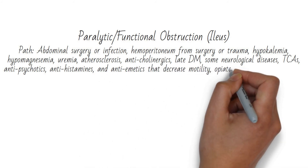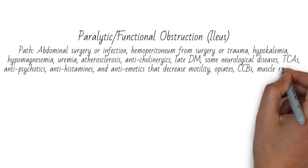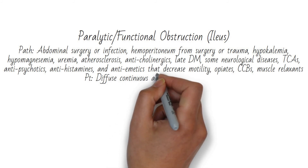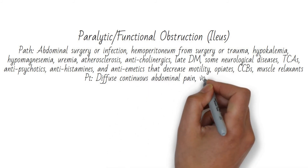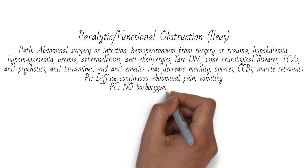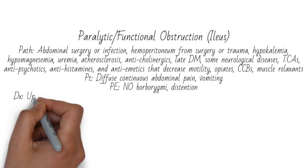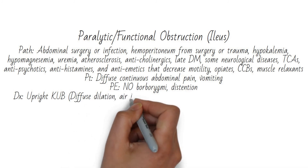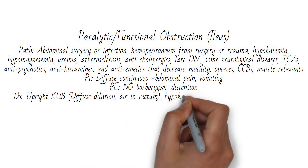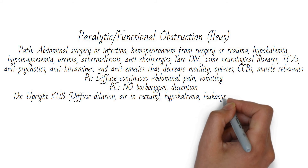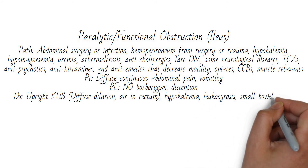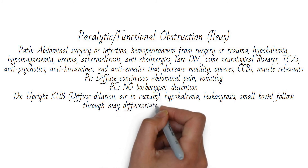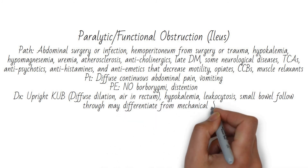The patient will present with diffuse, continuous abdominal pain and vomiting. They won't have borborygmi or any bowel sounds, and they'll be distended. Workup is similar to mechanical obstruction — upright KUB will show diffuse dilation with air in the rectum. The patient may have signs of an underlying etiology such as hypokalemia or leukocytosis, and small bowel follow-through may help differentiate from mechanical obstruction.